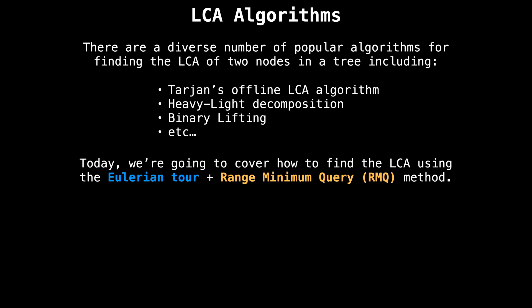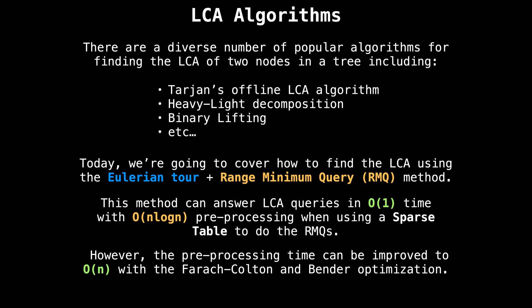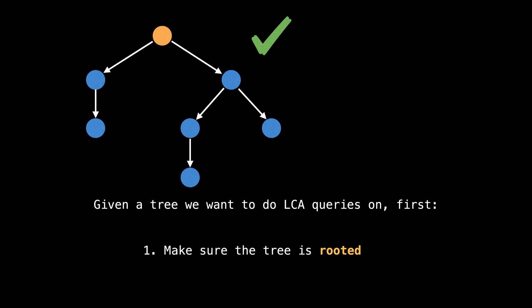In terms of algorithms for finding the LCA of two nodes, there are a diverse number of popular algorithms to choose from. Today, we're going to cover how to find the LCA using the Eulerian tour and a range minimum query method. The Eulerian tour method can answer LCA queries in constant time and only requires n log n pre-processing when using a sparse table to do range minimum queries. However, with an optimization, the pre-processing time can be brought down to linear time, which would make the Eulerian tour method asymptotically optimal, which is pretty much as good as it gets. Alright, so before we dive into the Eulerian tour algorithm itself, there are a few housekeeping things to go over.